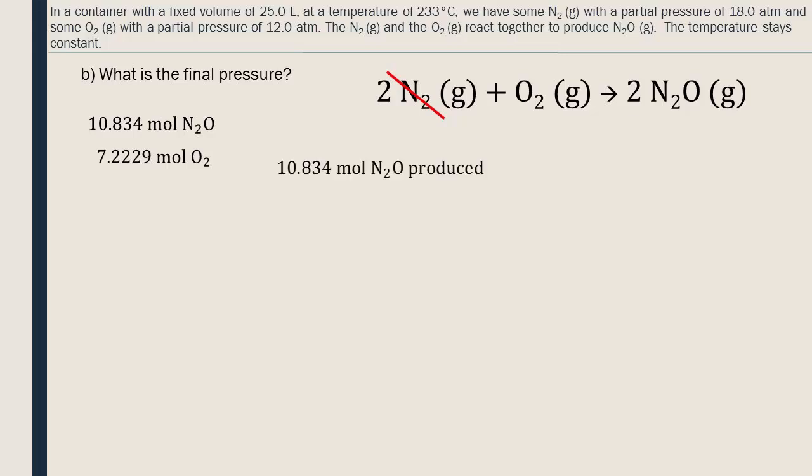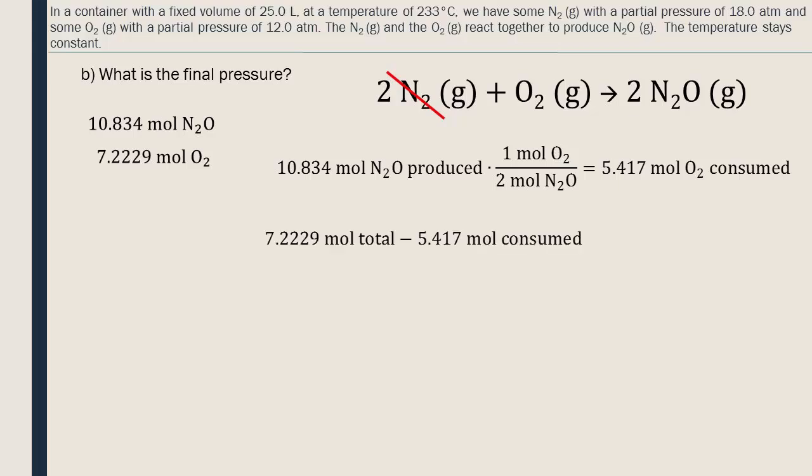We know how many moles of N2O were produced, but we need to calculate the number of moles of oxygen left over. To do this, we need to find how much oxygen was consumed in the reaction. We must look again at the stoichiometric ratio. We subtract the consumed amount of moles of oxygen from the total number of moles of oxygen. We find that we have 1.8059 moles of oxygen in excess. These moles will contribute to the final pressure.